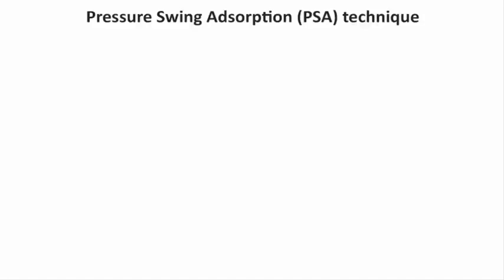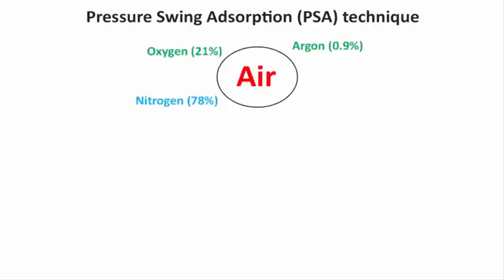In this video we are going to learn about Pressure Swing Adsorption Technology. This technology is used to separate various gases from air. Ambient air, in other words the air around us, contains 21% oxygen, 78% nitrogen, 0.9% argon and 0.1% rare gases.